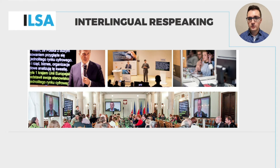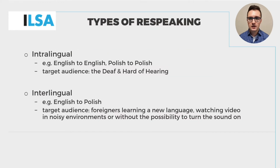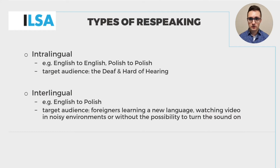However, from the point of view of re-speakers, re-speaking in the same language and interpreting into another language are quite different. Thus, we distinguish between two types of re-speaking. Intralingual re-speaking, which happens within the same language — for example English to English or Polish to Polish. The target user group of this type of re-speaking are mainly the deaf and the hard of hearing.